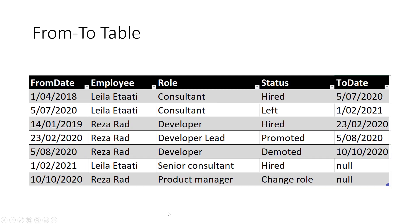What I would recommend is a structure like this — I call it a from-to table. This table is very similar to the previous table; the only difference is that I have two date columns here: one is the from date and another is the to date. I still have the status changes, the item, everything like that. So here it tells me that Layla was hired as a consultant on the 1st of April 2018 until the 5th of July 2020. Just looking at one record gives me more information than what I had in the previous structure.